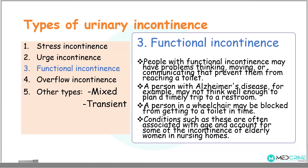The third type is functional incontinence. People with functional incontinence have problems either in thinking, moving, or communicating, which prevents them from reaching the toilet. For example, a person with Alzheimer's disease may not think well enough to plan a timely trip to the toilet to urinate. A person in a wheelchair, on the other hand, may be blocked from getting to a toilet in time. Most of these conditions are associated with age and account for some incontinence in elderly women in nursing homes.